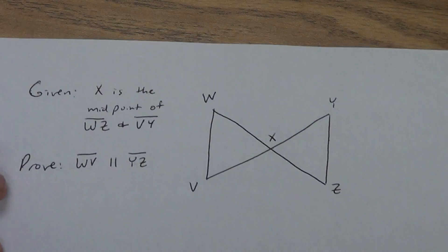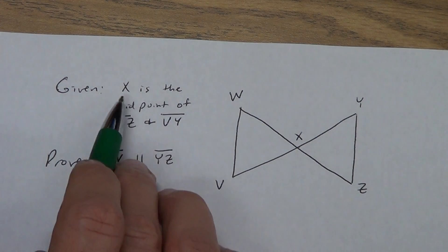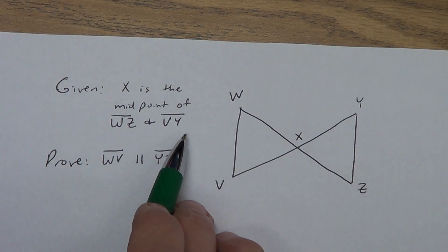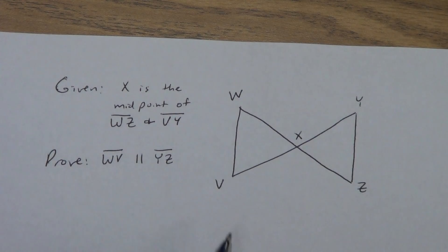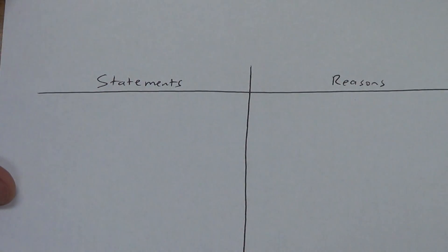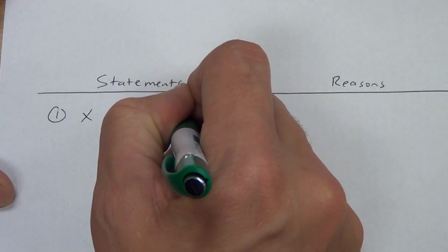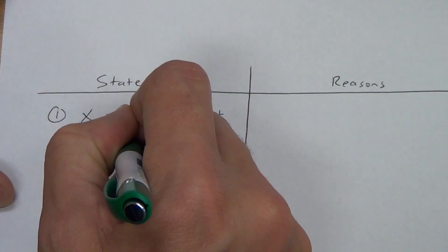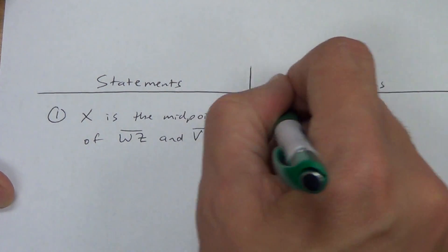We're going to do one more proof and then we're done. Copy this one down. You have points V, W, X, Y, and Z. X is the midpoint of WZ and VY. We're going to prove that we have some parallel lines — WV and YZ. Copy it down; I'm going to start the proof here in just a second.